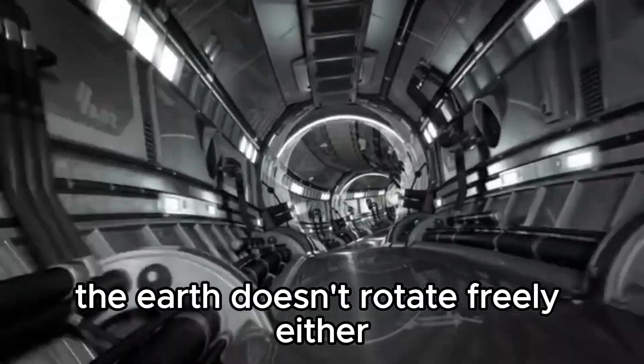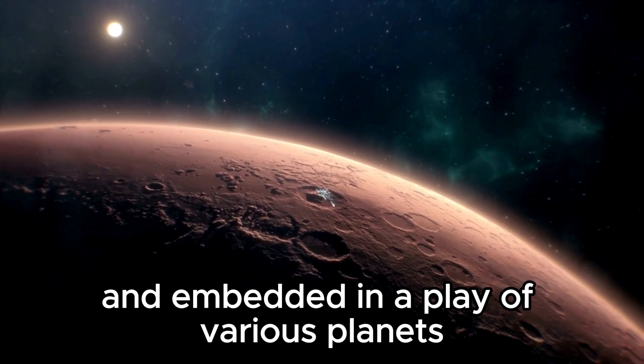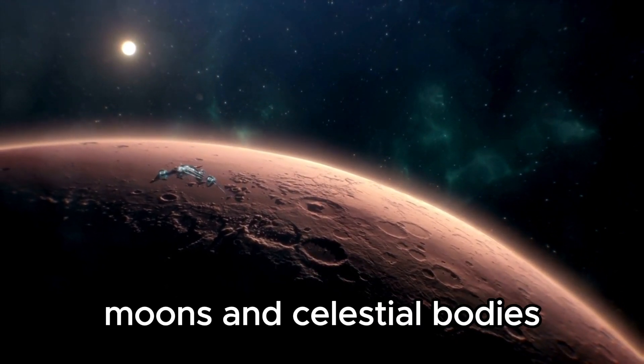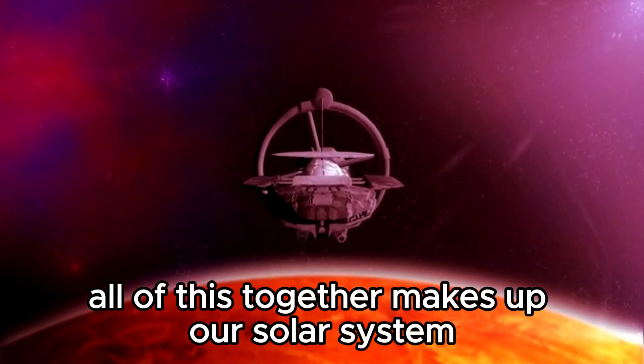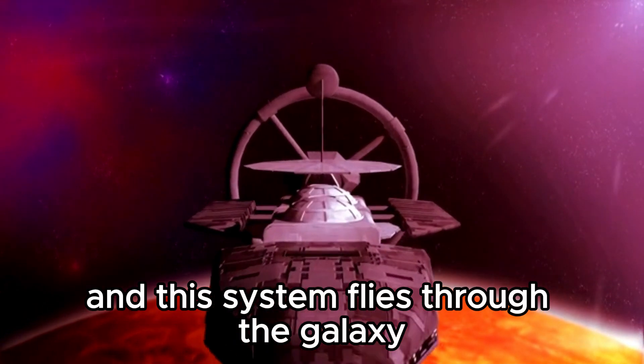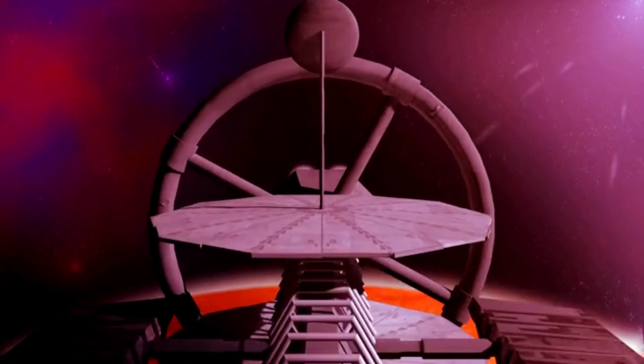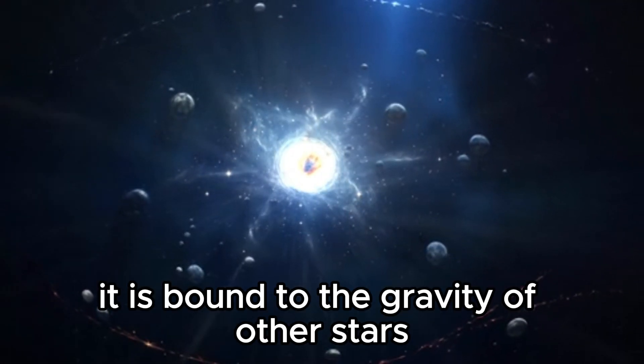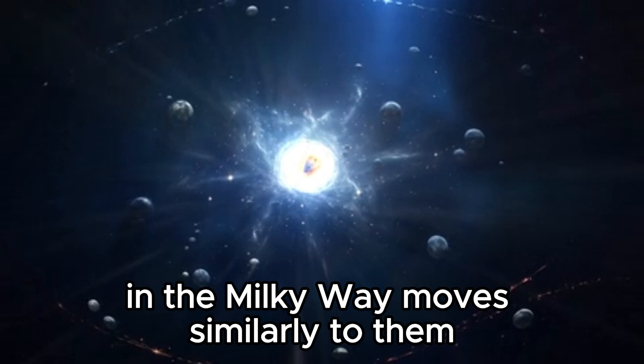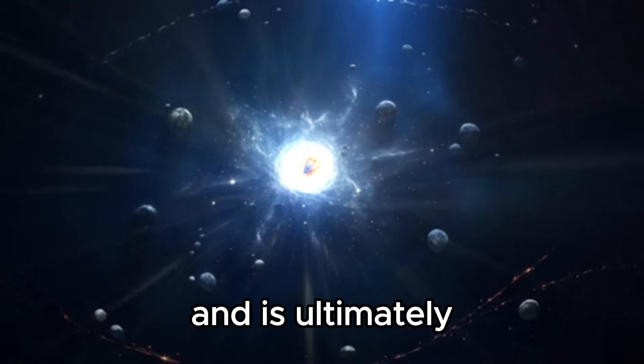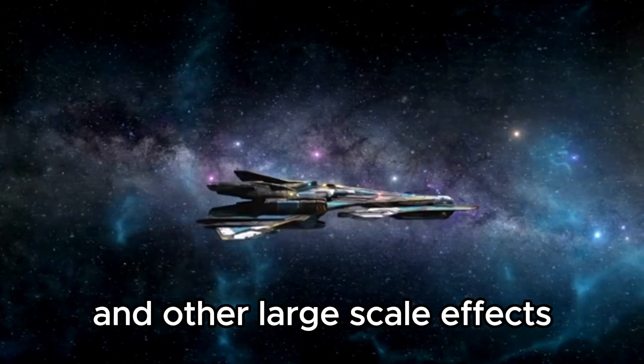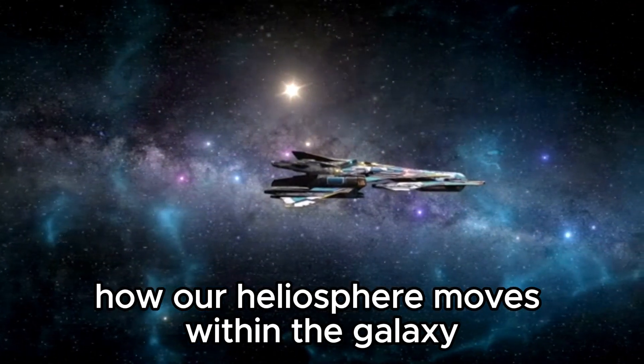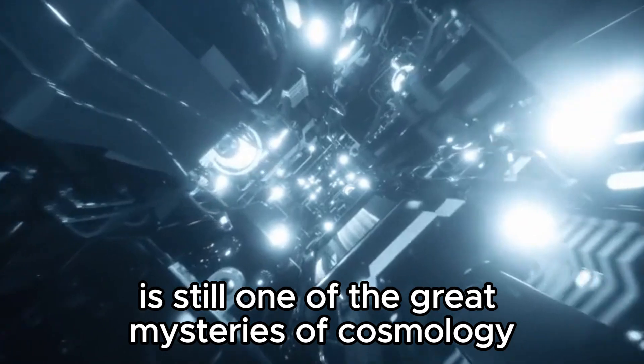The earth doesn't rotate freely either, but is bound to the sun and embedded in a play of various planets, moons, and celestial bodies. All of this together makes up our solar system, and this system flies through the galaxy like a closed case. Yet even the sun can't move freely within the galaxy. It is bound to the gravity of other stars in the Milky Way, moves similarly to them, and is ultimately also influenced by the center of the galaxy and other large-scale effects. How our heliosphere moves within the galaxy and what effects it causes or is exposed to is still one of the great mysteries of cosmology.